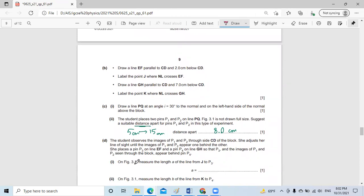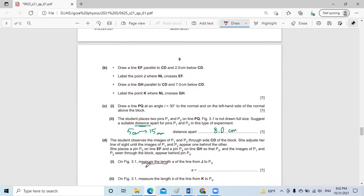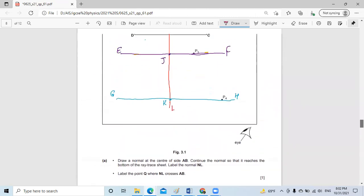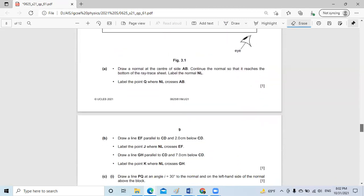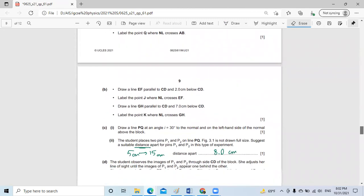What they ask here: after we do that, on the figure, measure using the ruler the length of the line J to P3. From J to P3, by using the ruler, I will measure the distance from here to here. It will be approximately 2.4 centimeters. Let me write it down. So it will be approximately 2.4.